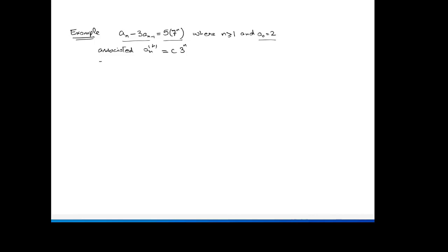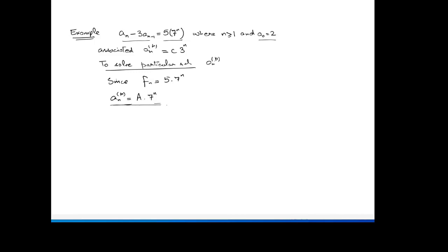Now to find the particular solution aₙᵖ: since f(n) = 5·7ⁿ, we seek a particular solution of the form aₙᵖ = A·7ⁿ for some constant A. Since this particular solution must satisfy the non-homogeneous recurrence relation aₙ - 3aₙ₋₁ = 5·7ⁿ, we substitute it into the recurrence relation.